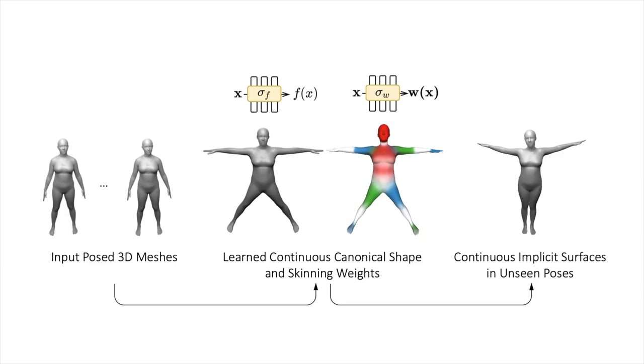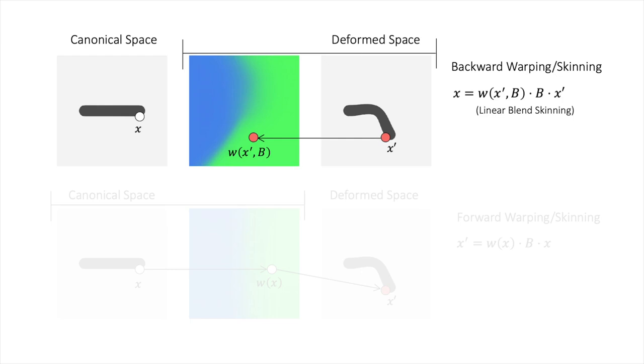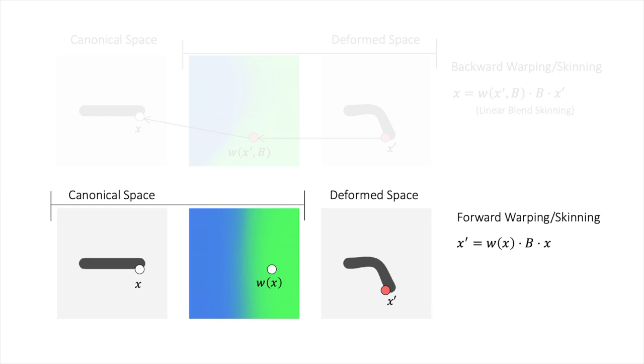But how can we deform a continuous function in a differentiable way? Existing methods use backward skinning and learn a weight field conditioned on the deformed point and the object pose. In contrast, in this work, we propose a forward skinning model that learns a weight field conditioned on the corresponding point in canonical space.